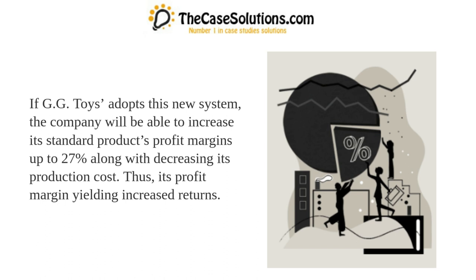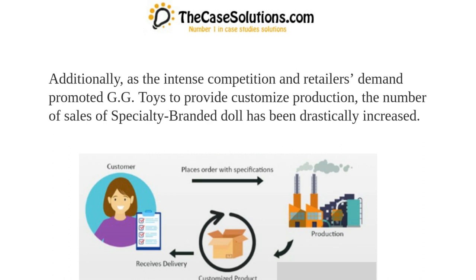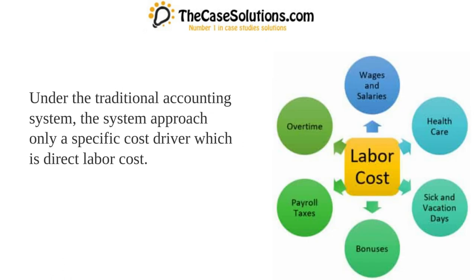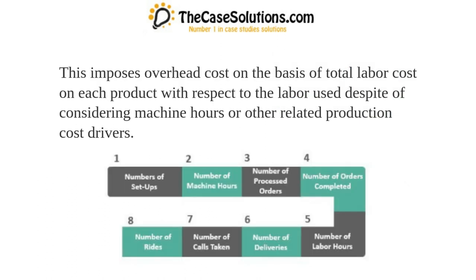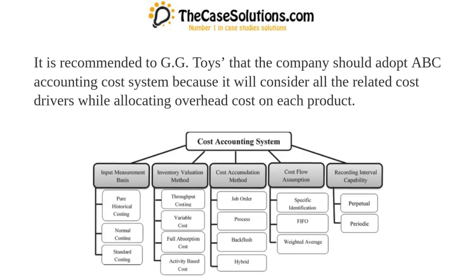If GG Toys adopts the ABC system, the company will be able to increase its standard products' profit margins up to 27%, while decreasing production costs, yielding increased returns. Under the traditional accounting system, only a single cost driver — direct labor cost — is used, imposing overhead cost based on total labor cost without considering machine hours or other related production cost drivers.